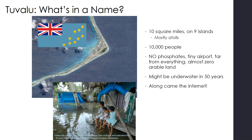And so along came the internet. Every country is given an internet designation — so Canada is dot CAN, the UK is dot UK — and Tuvalu got dot TV. Tuvalu's economy right now is almost based entirely off of selling web addresses that end in dot TV that are registered to that country. So anytime you visit an internet website that ends in dot TV, it is registered in Tuvalu.